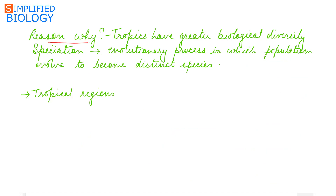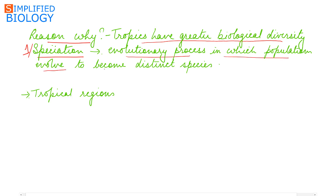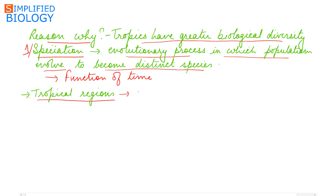Ecologists and evolutionary biologists have proposed various hypotheses for why the tropics have greater biological diversity. The first is speciation — formation of species — which is an evolutionary process in which a population evolves to become distinct species. It is a function of time and takes a long time. In tropical regions, the climatic and environmental conditions are favorable for growth throughout the year.